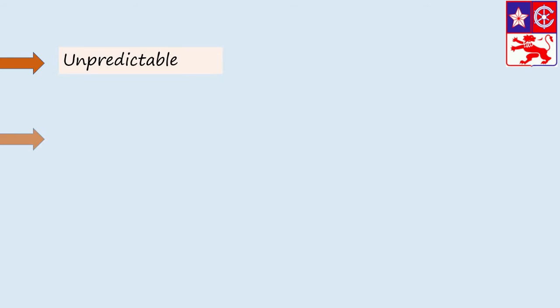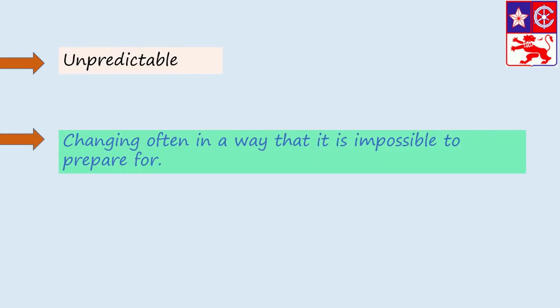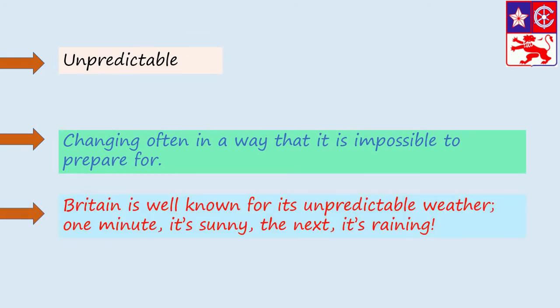Unpredictable. Changing often in a way that is impossible to prepare for. For example, Britain is well known for its unpredictable weather. One minute it's sunny, the next it's raining.